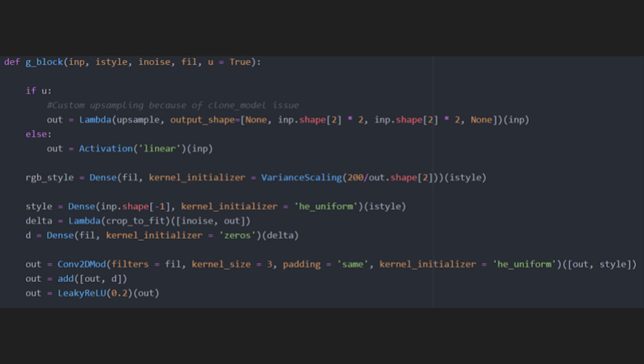Here we see the new code for a generator block. First we get the values for the style vector from the mapping network and scale the inconsequential noise. We then use our modulated convolution with the image features and style vector. Add our inconsequential noise and then apply a non-linearity function.